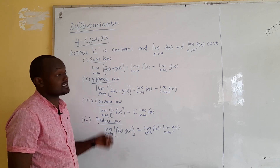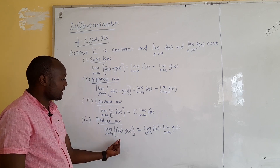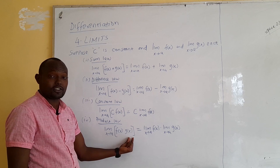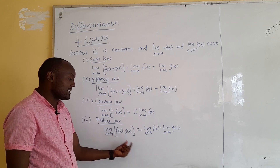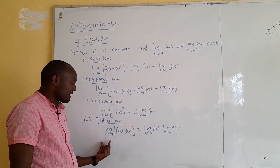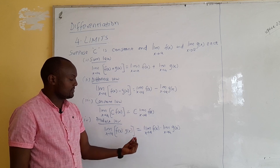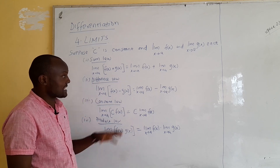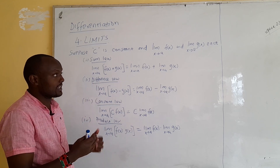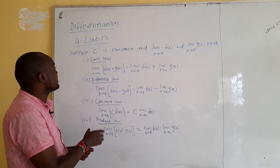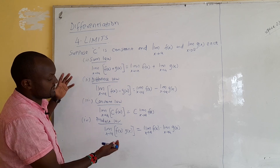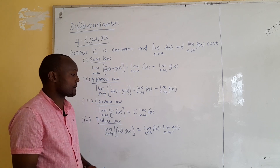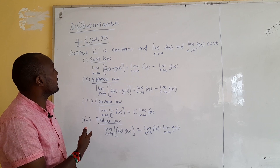When it comes to the product rule, it is just the same as sum and difference. If you have the product of two functions, when it comes to limits you can make it the limit of f(x) times the limit of g(x). These are just the basic rules of limits.